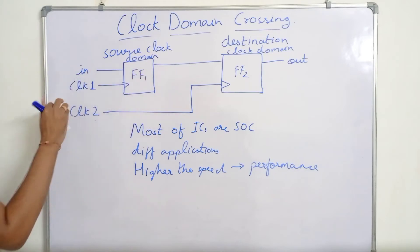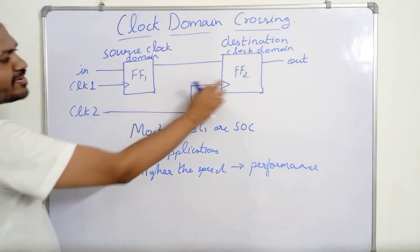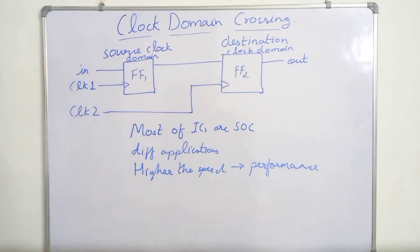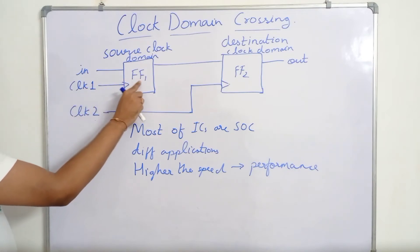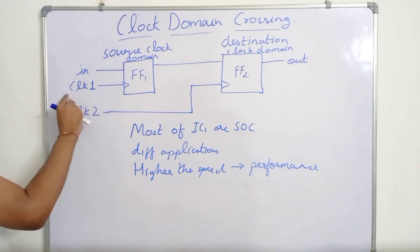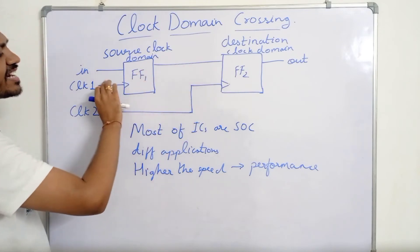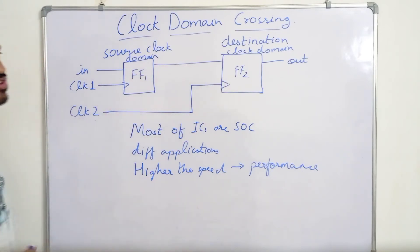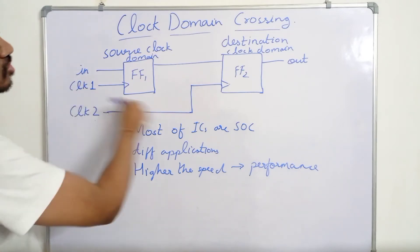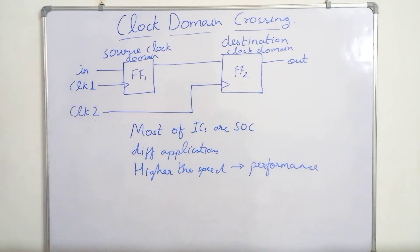When the data from one clock domain crosses to another clock domain — when this data travels from flip-flop 1 running at clock 1 to flip-flop 2 running at clock 2 — that is what we call as clock domain crossing.